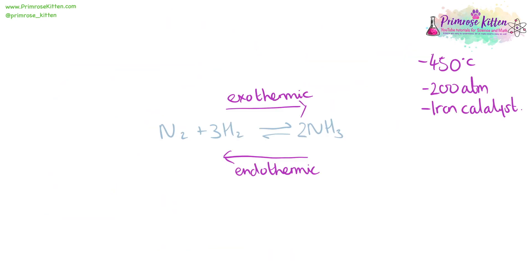The conditions used in the Haber process are actually a compromise. The forward reaction is exothermic, so using Le Chatelier's principle of dynamic equilibrium, we should use a low temperature to drive the forward reaction. But at a low temperature we have a low rate of reaction. So even though using the high temperature of 450°C drives the reaction backwards away from ammonia, the rate of reaction is so fast that it is constantly cycling. The ammonia comes off as a liquid so it can be removed, which also drives the forward reaction.